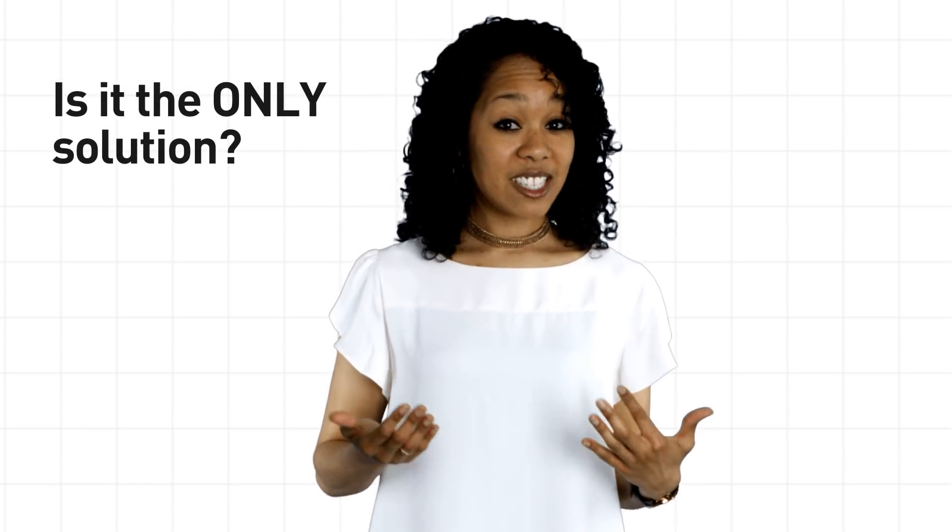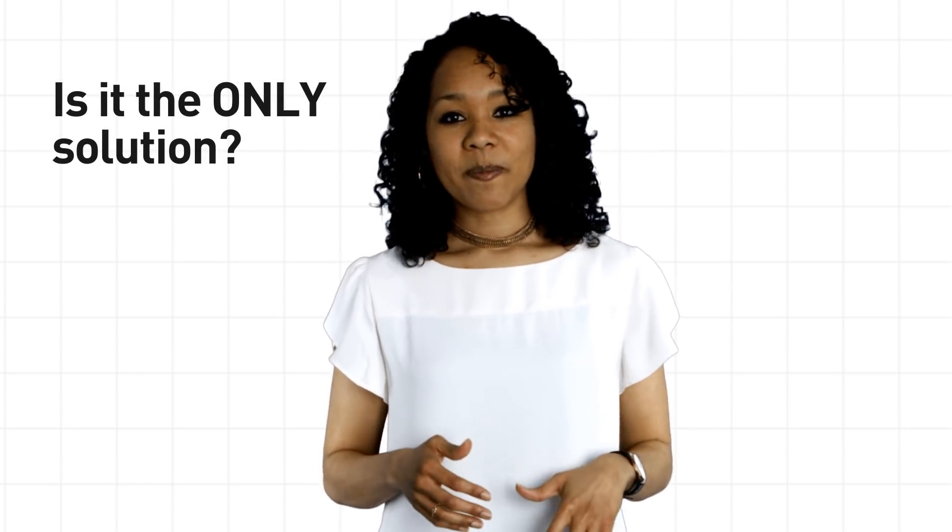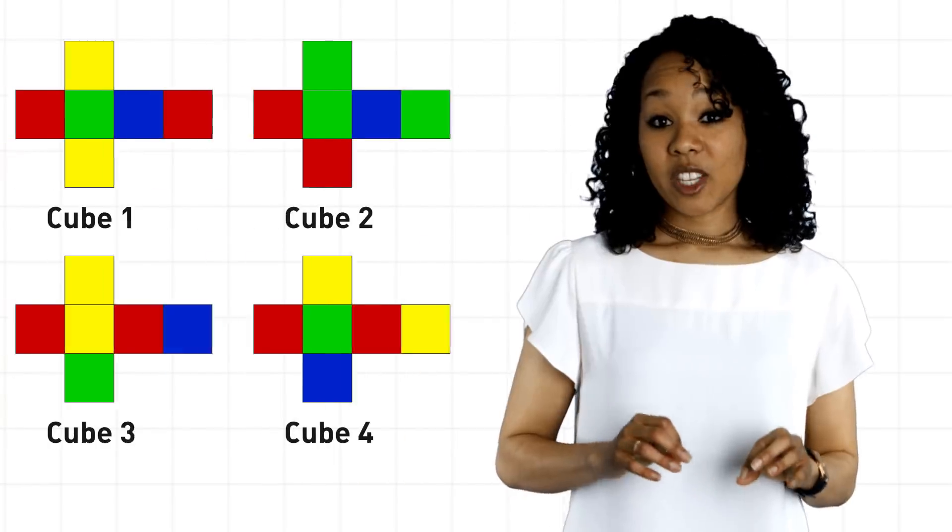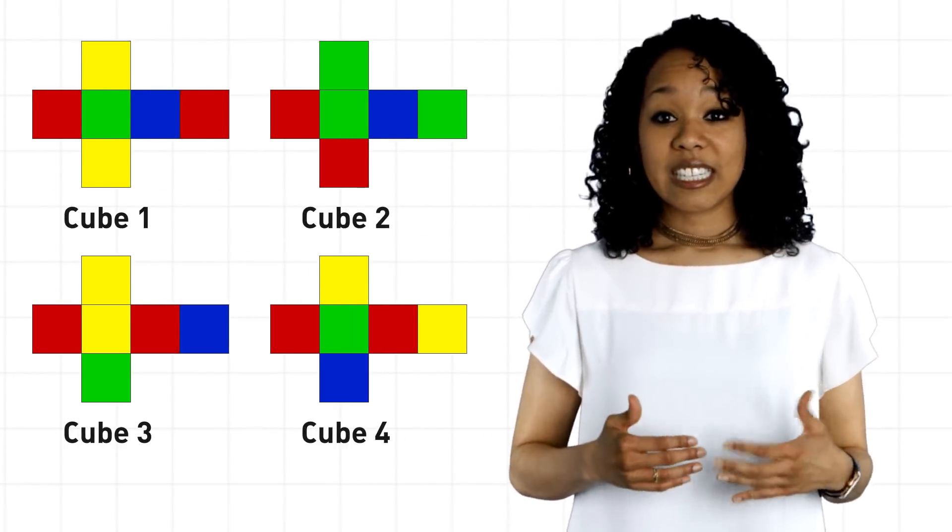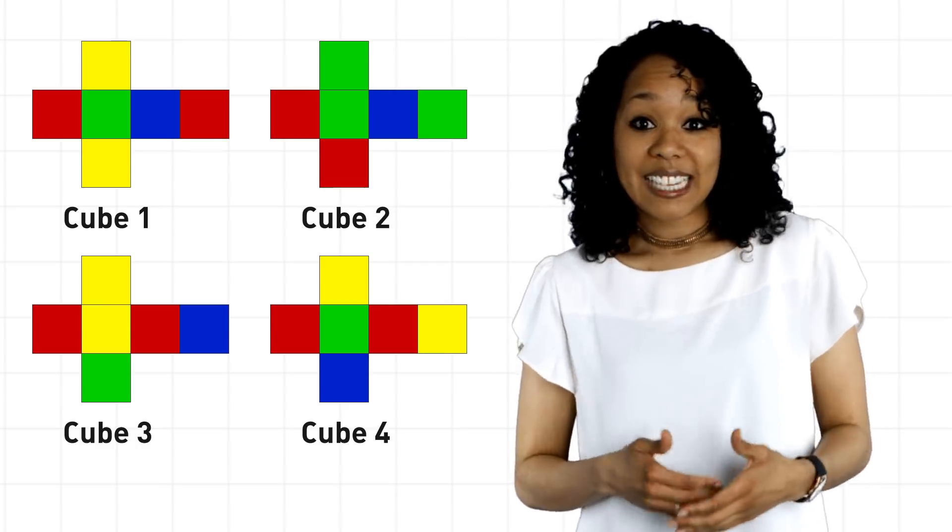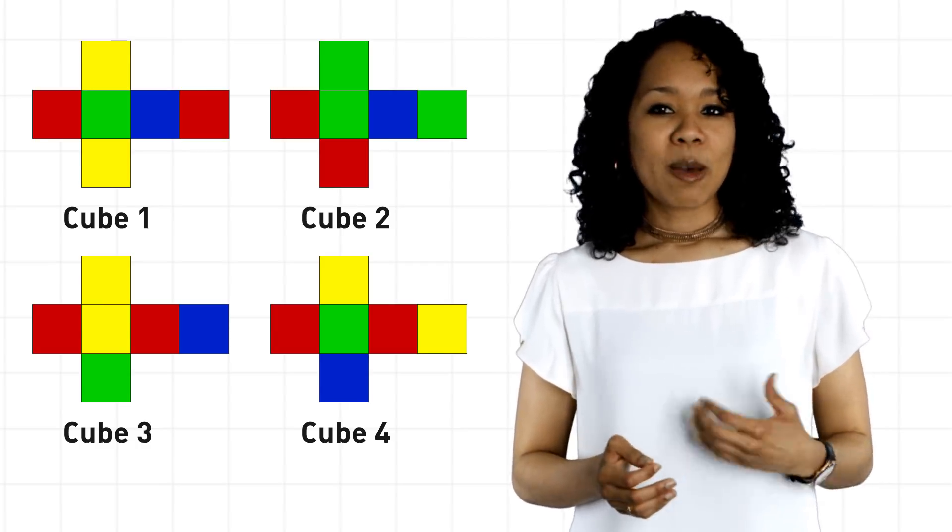To close out, I'll leave you with two questions to think about. First, we found one solution, but is it the only solution? Another question, here's a set of four different cubes. Can you use graph theory to find a solution to the instant insanity puzzle with these cubes? Let me know what you come up with in the comments. Have fun, and see you next time.